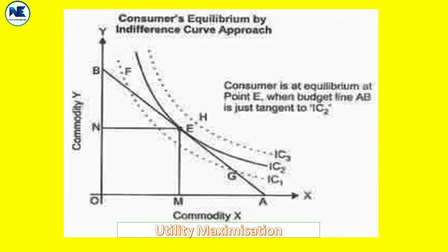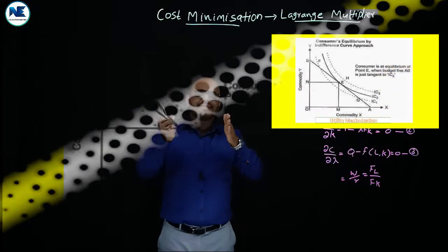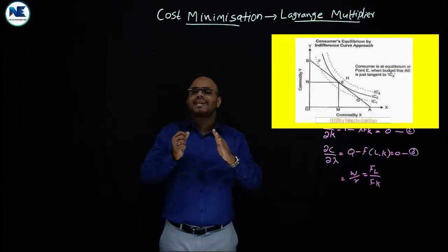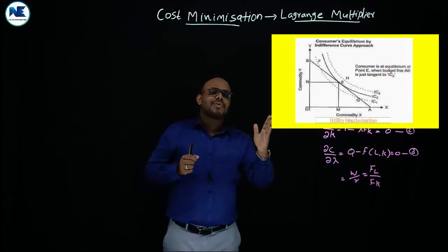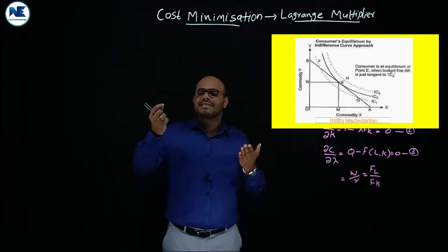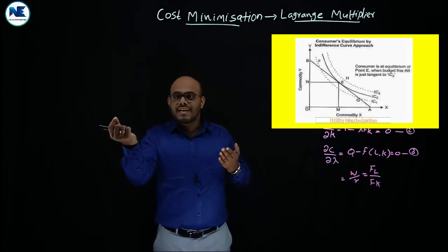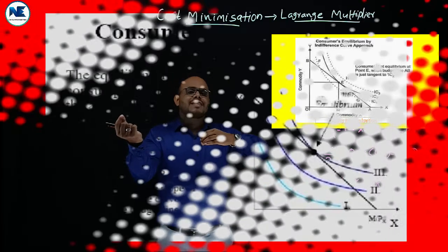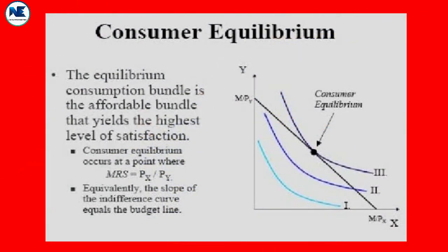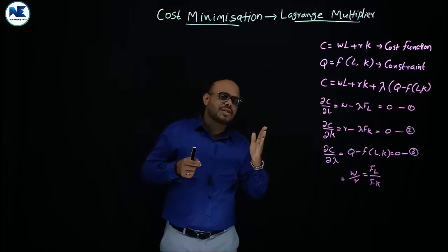The slope of the indifference curve is the same as the tangent point where consumer equilibrium occurs. The tangency between the slope of the budget line and the slope of the indifference curve determines equilibrium. The slope of the indifference curve is MRS — Marginal Rate of Substitution.